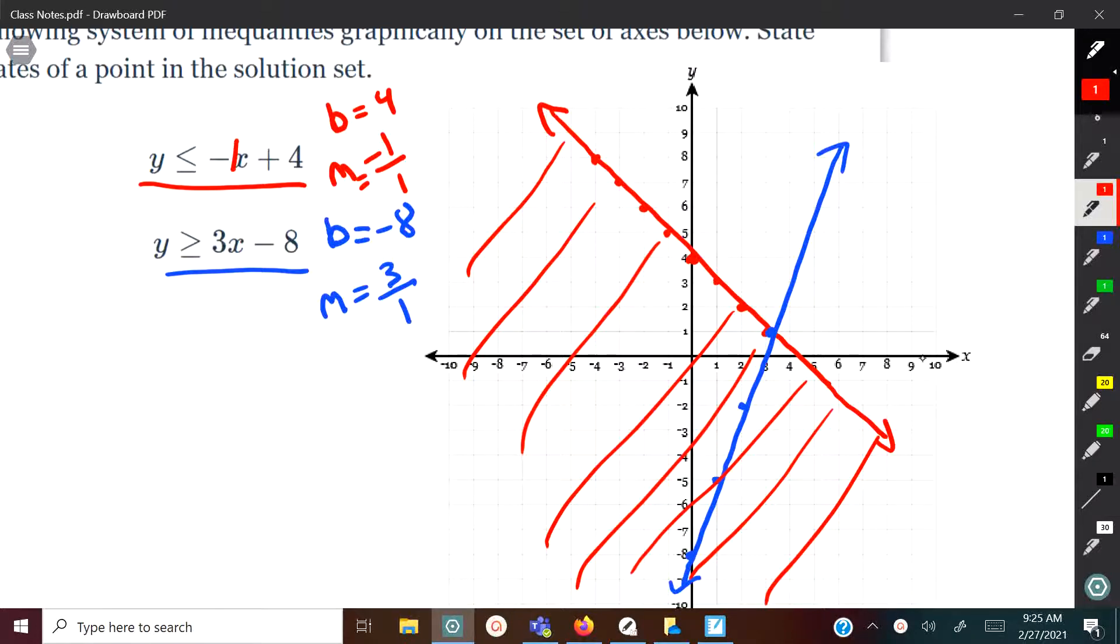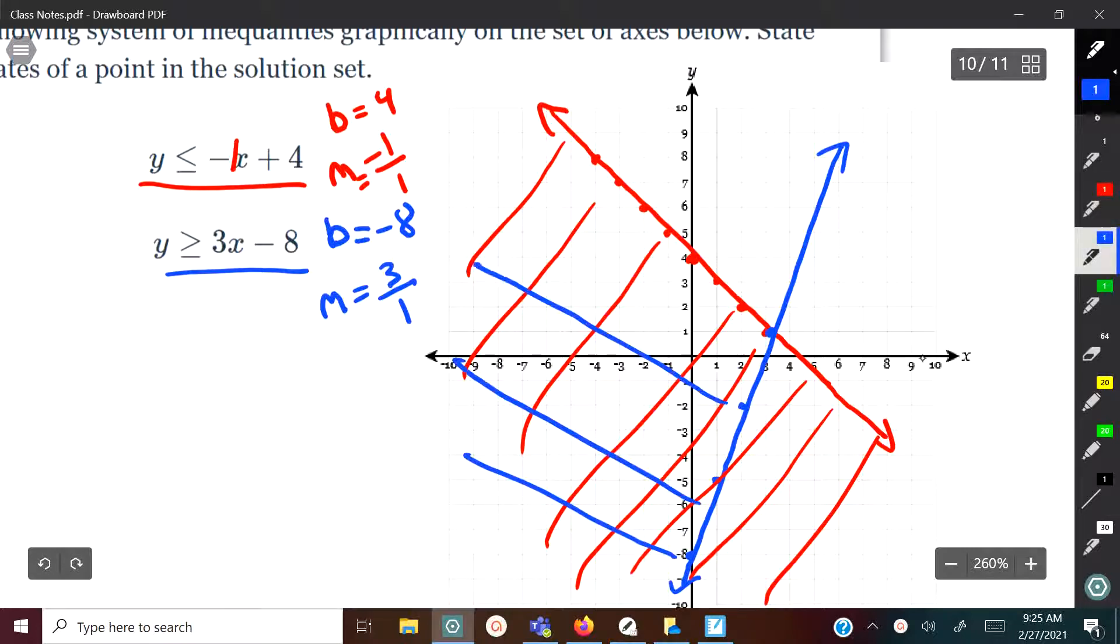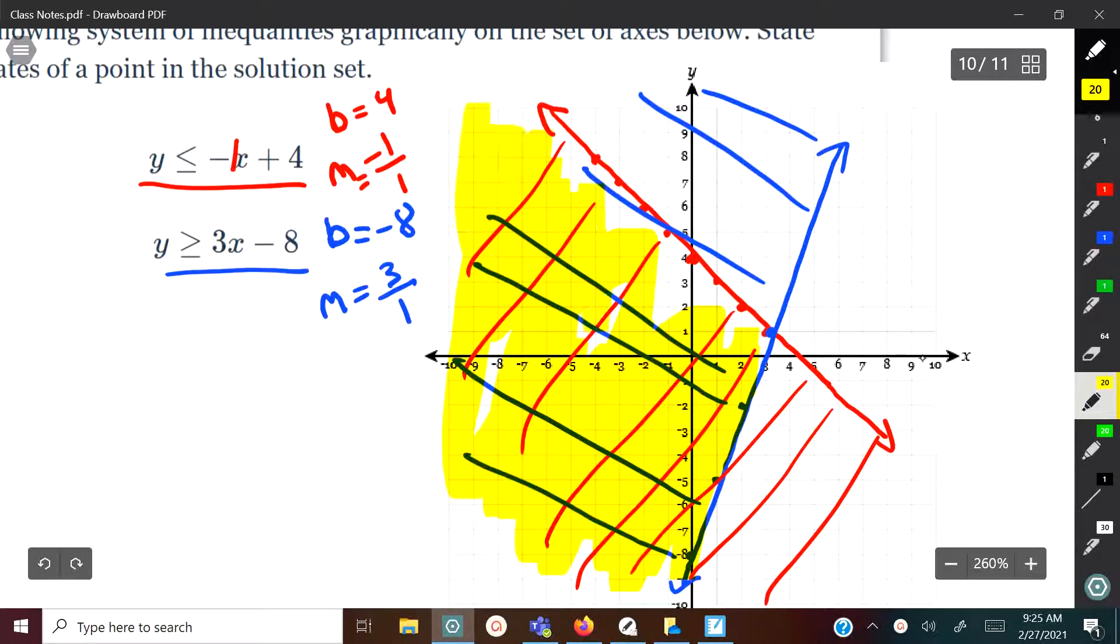Now, the blue one here is shade above. It's greater than, so you shade this way. Let me change my color. So now we have them both graphed. Now, the one that is the solution for both of them is the part that's inside here. So that part is the solution.